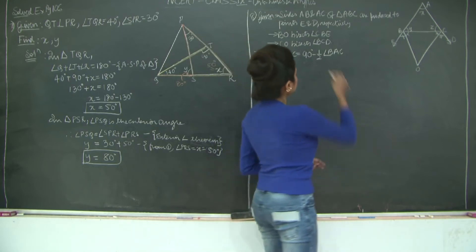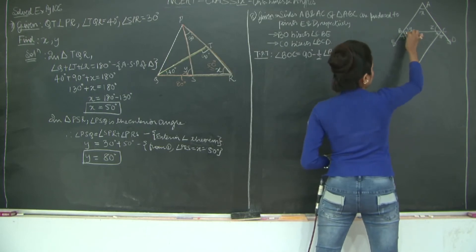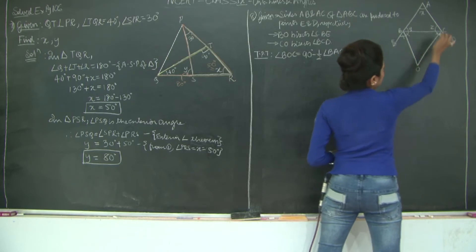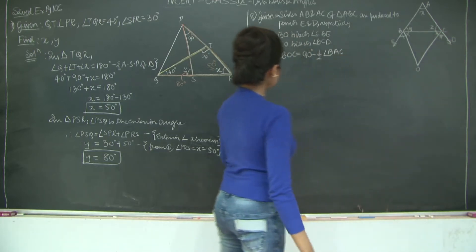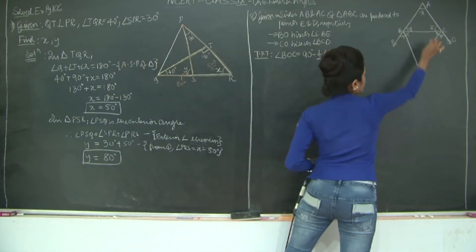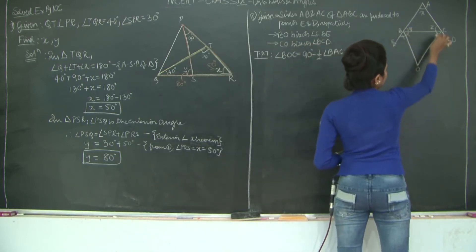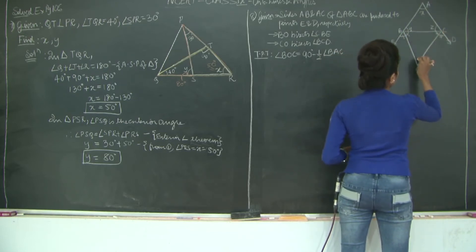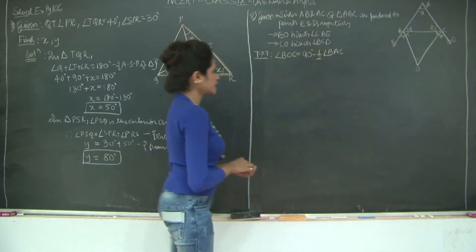Ray BO bisects angle CBE, so these two angles are equal. Similarly, ray CO bisects angle BCD, so these two angles are equal. We need to prove that angle BOC = 90 degrees minus half of angle BAC.